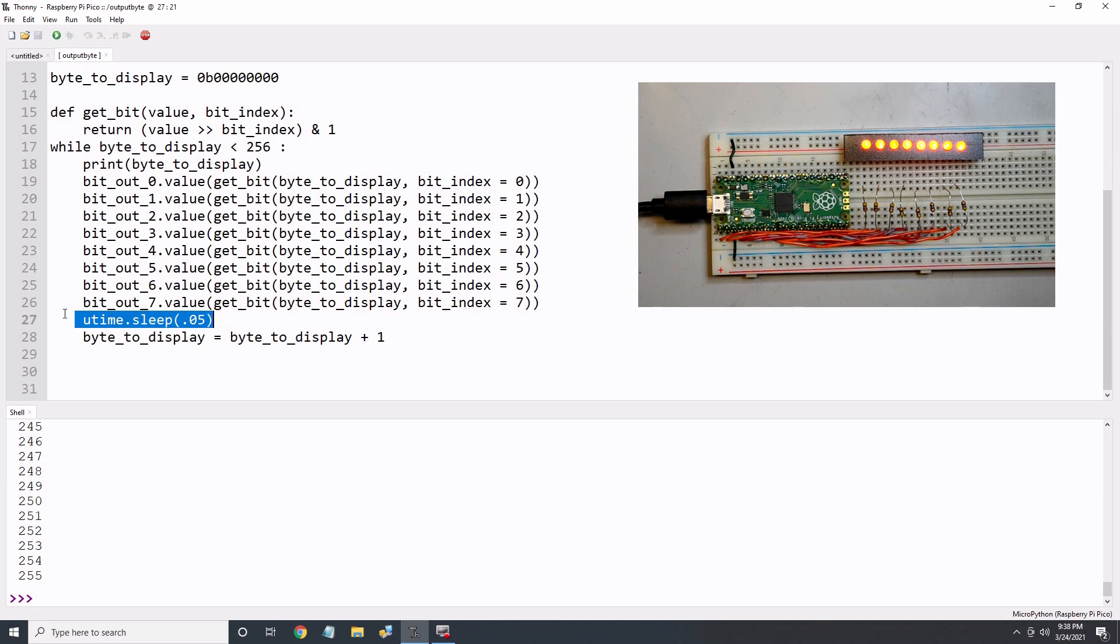Next, let's comment out the sleep statement to see how fast this can run. Wow, I think that blink was the entire 256 bytes. That looks pretty fast but I suppose I should measure it.